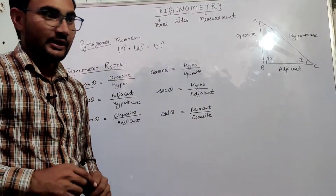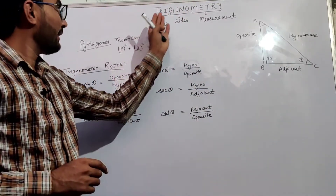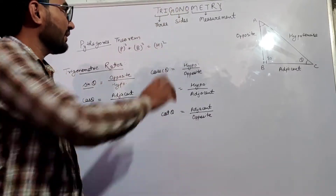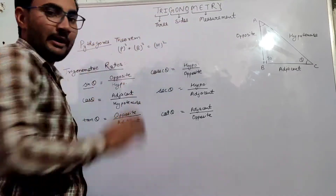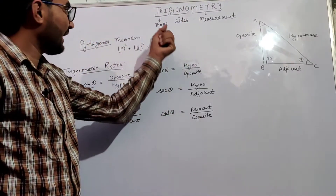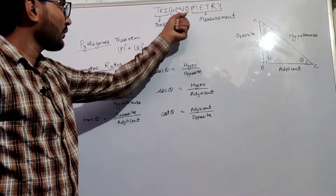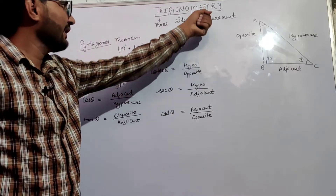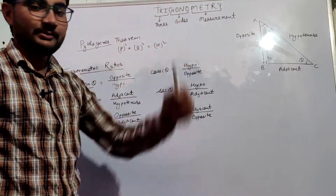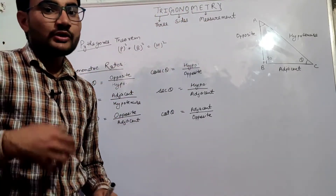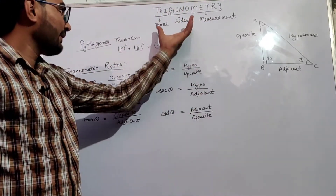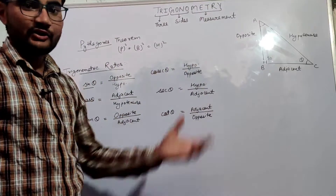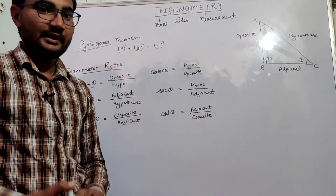Trigonometry is a Greek word which is made from three words: Trigonon and Metri, where Trigonon means three, Gono means sides, and Metri means measurement. So Trigonometry is basically the measurement of three sides of a triangle.